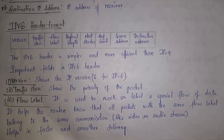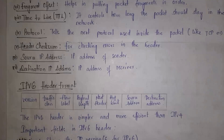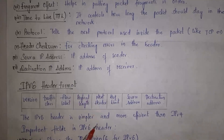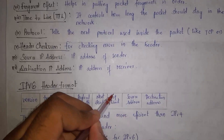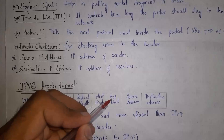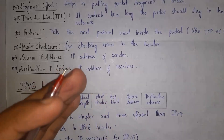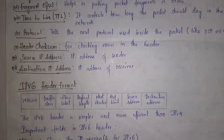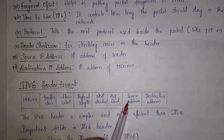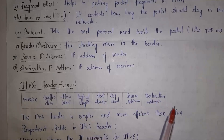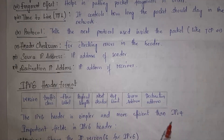The next field is payload length, which gives the size of the data. The next field tells what field is coming after the IPv6 header. Next is hop limit — a hop is nothing but a router — so hop limit tells through how many routers the data is transferred to the receiver. The last fields are source IP address and destination IP address, which are the sender's IP address and the receiver's IP address.